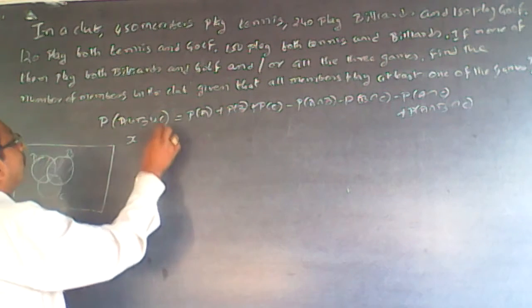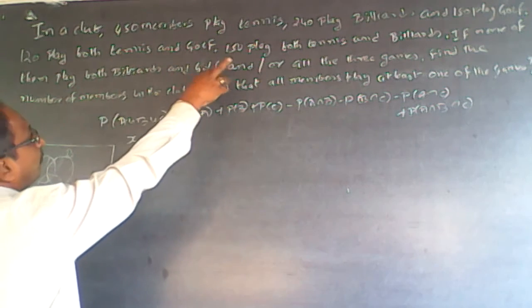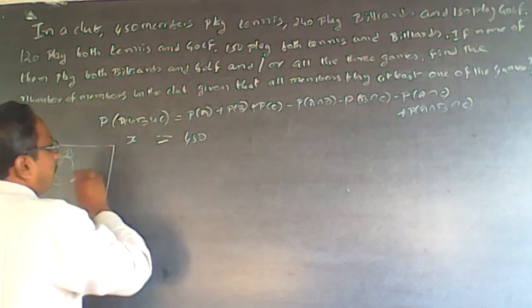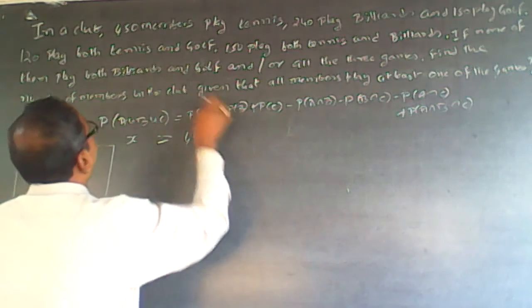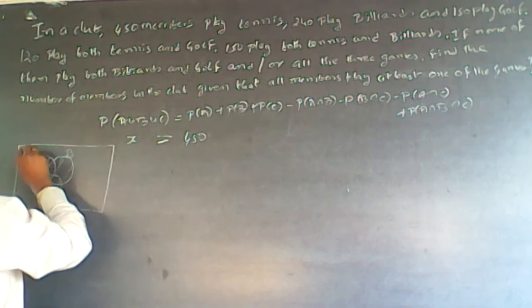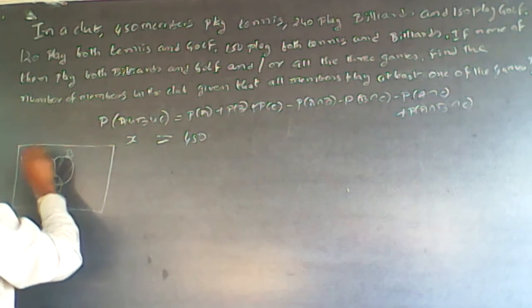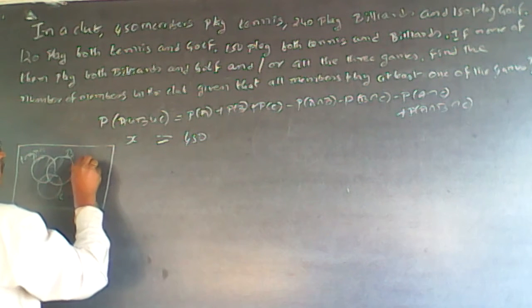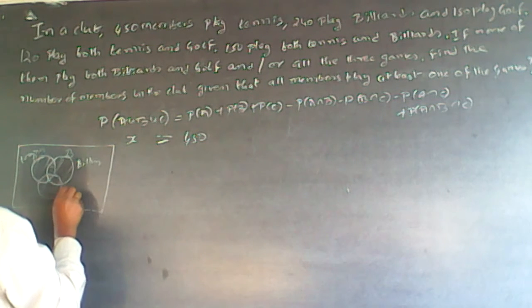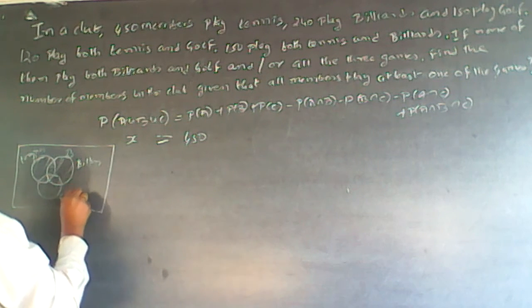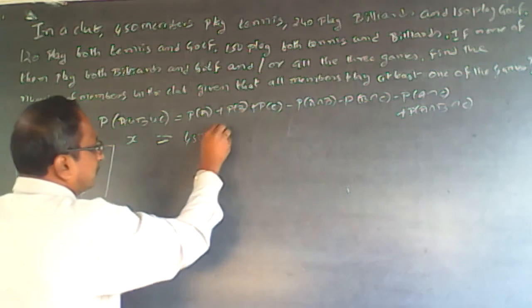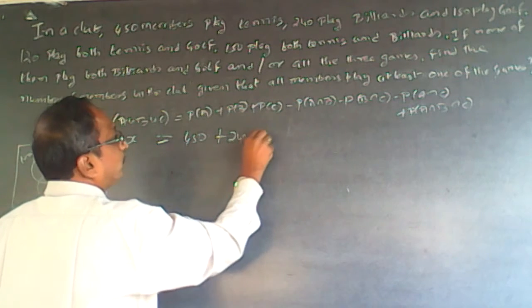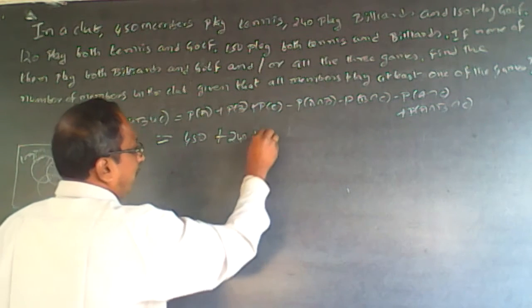Now, this is equal to A will be 450. So A is 450, this is tennis. A is tennis. B is billiards. And C is golf. Now, plus P of B will be 240, plus P of C will be 180.